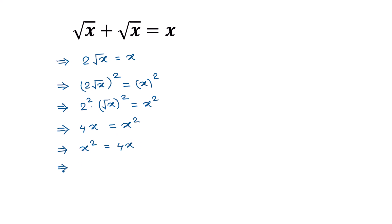Now taking 4x to the left side we will get x squared minus 4x is equal to 0. Taking common x from the left side, we will get x times x minus 4 is equal to 0.